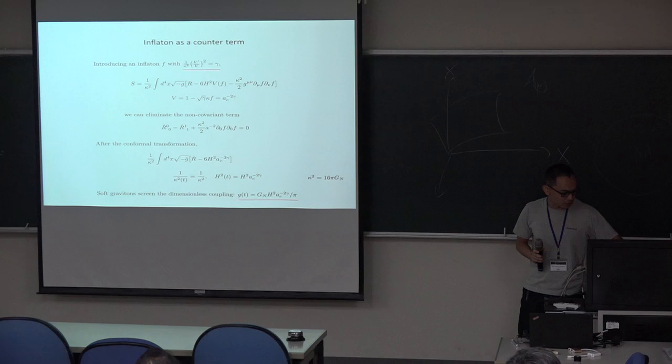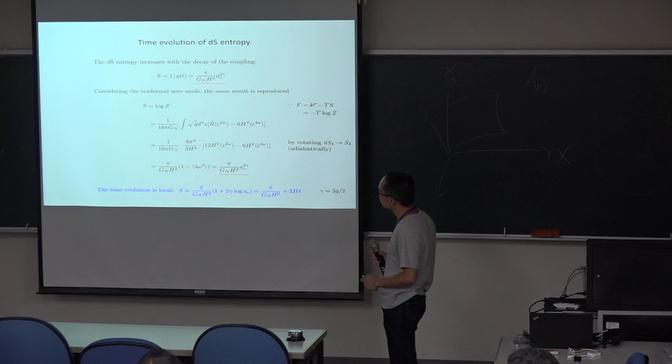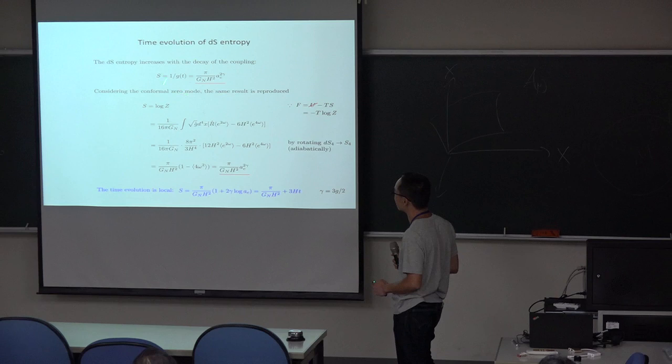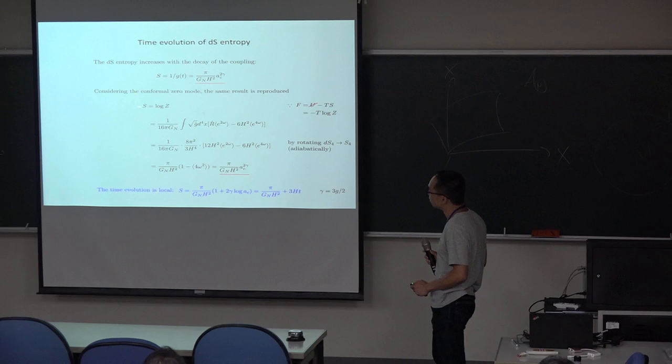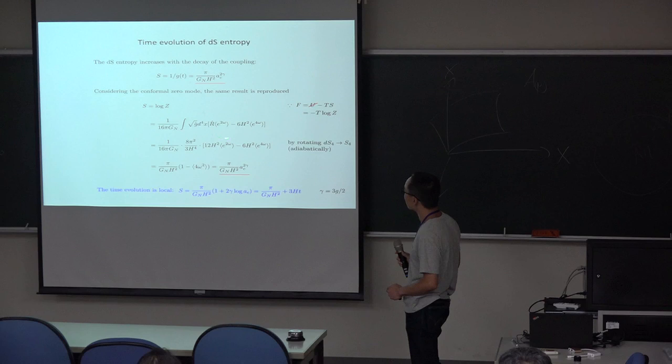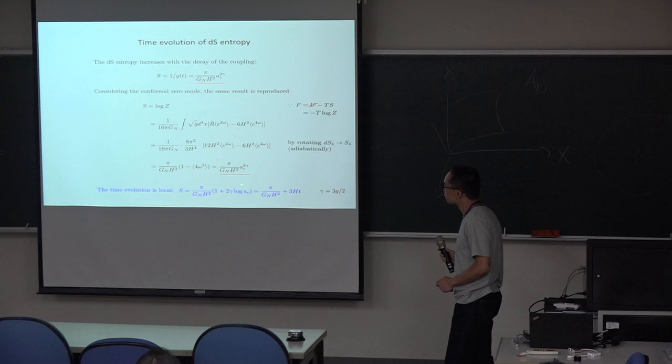Let us first get the corresponding entropy. If the non-covariance is identified by this renormalized coupling, it evolves in time. Let us recall that the de Sitter entropy can be derived from the partition function because in this space there is no internal energy. So by evaluating the partition function with the conformal mode fluctuation, we can reproduce the time evolution of the de Sitter entropy.